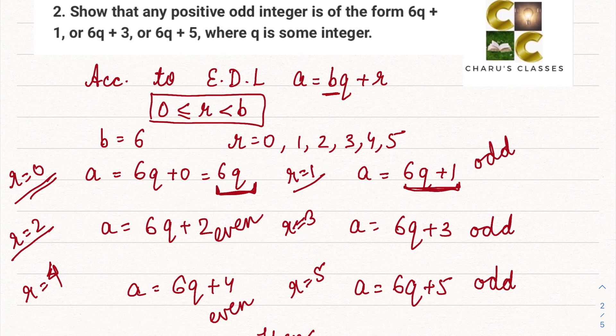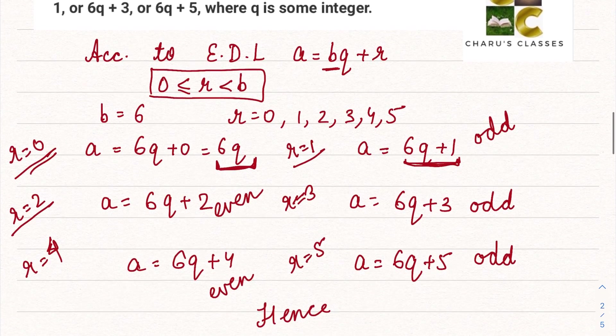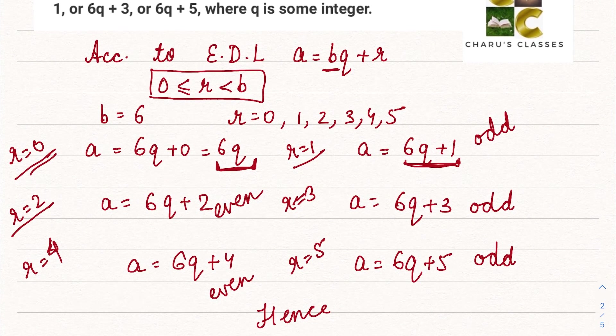So you can see all the 6q + 1, 6q + 3, and 6q + 5 numbers are all odd numbers. So we can say hence proved.